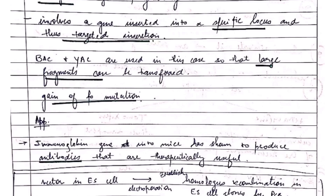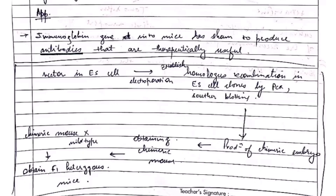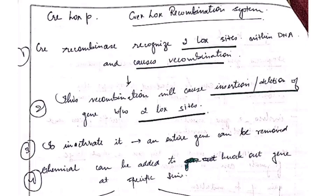A DNA construct containing a specific gene — such as a mutated gene or a reporter oncogene — is taken. These genes are exposed to the sites of Cre recombinase, which results in the omission of intervening DNA. The modified gene is then introduced into the endogenous locus, placed between two loxP sites. Embryonic stem cells now carry the modified gene.